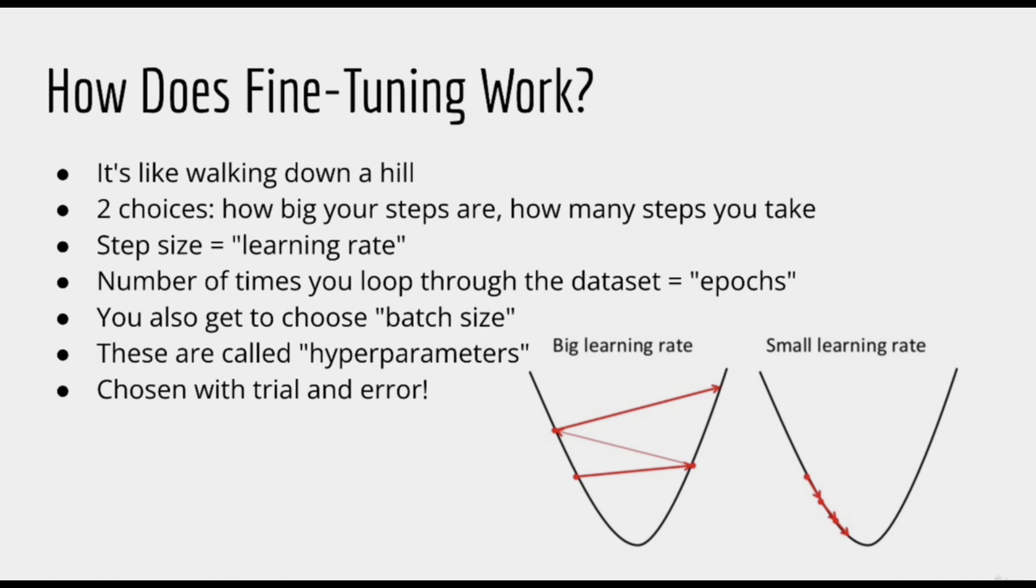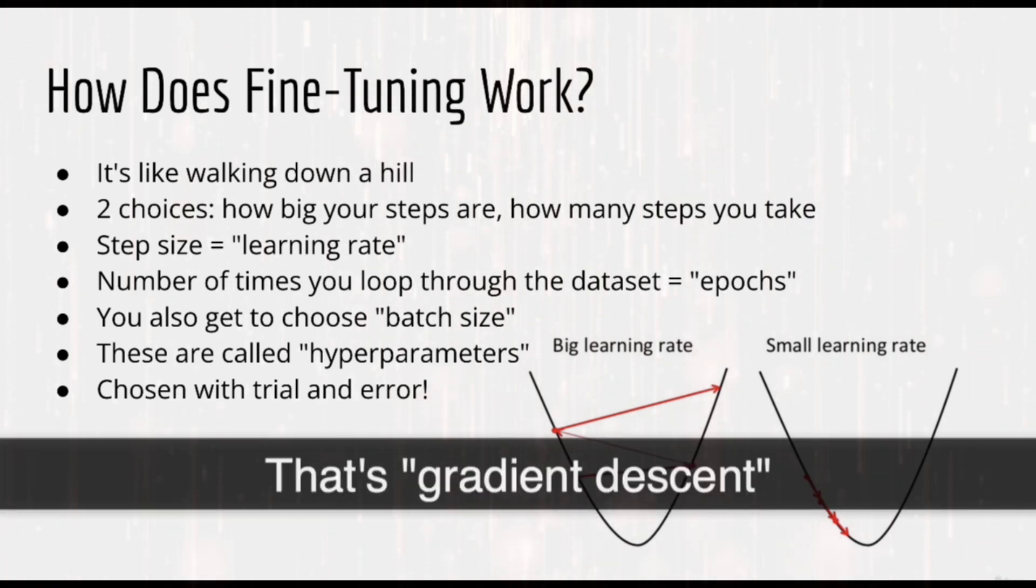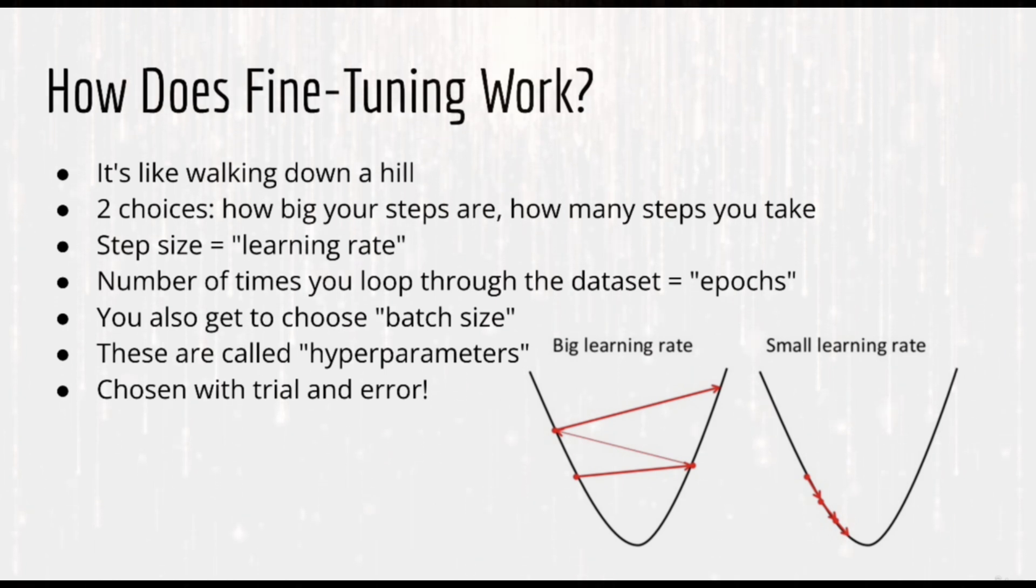So we talked a little bit about how fine-tuning works. But to fully understand the options that are available to you, you need to understand some of the technical details. Training neural networks happens through a process called gradient descent. You can imagine it like walking down a hill to try and get to the bottom. There are two important things to think about during this process. One, how big the steps you take are. And two, how many steps you take.